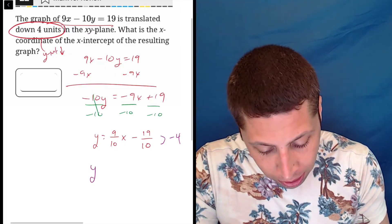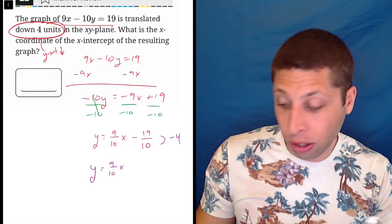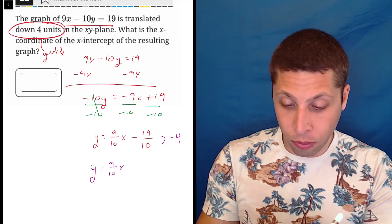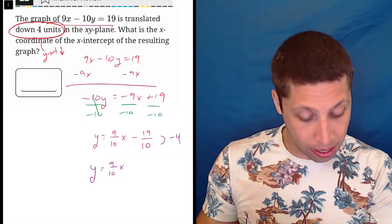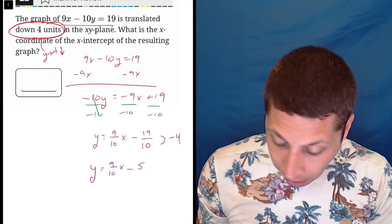So my new equation is going to be still the same slope, 9 tenths X. And then here I'll just do my calculator. So negative 19 over 10, that's negative 1.9, minus 4. So that's negative 5.9.